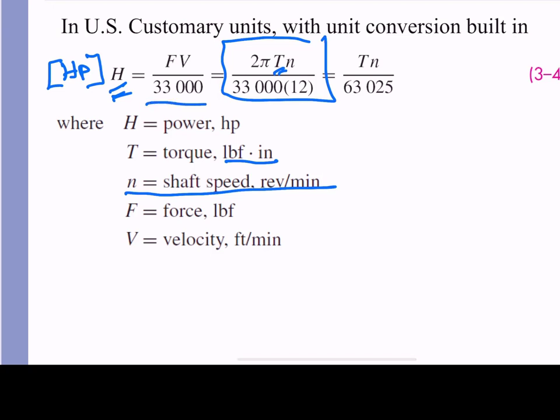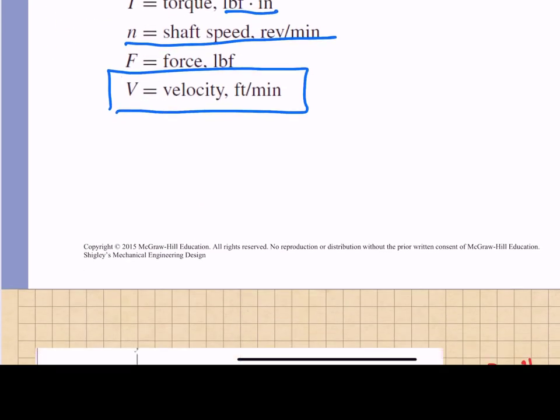You can also use this equation right here, where we get the force out that's acting at the outer boundary of the shaft, given what's called a pitch velocity V in feet per minute. You'll get to more of this as we move through the course.